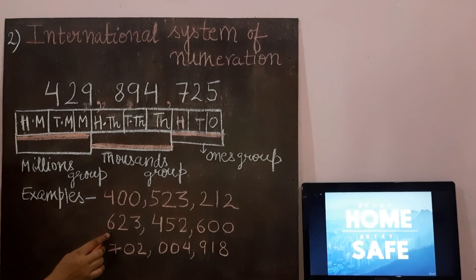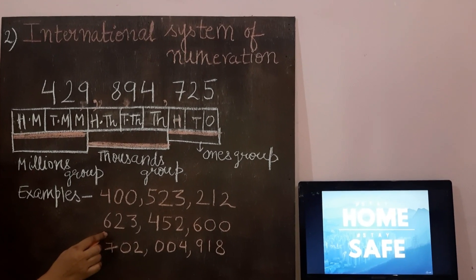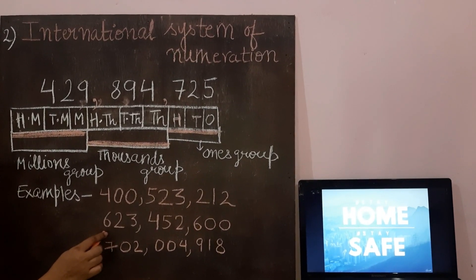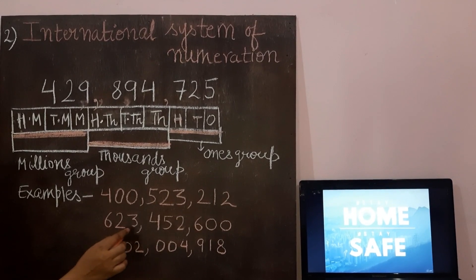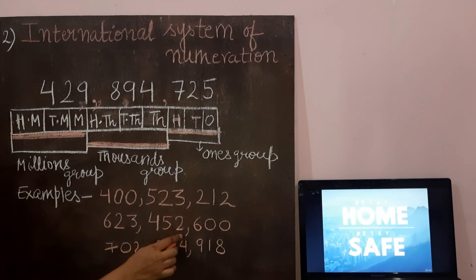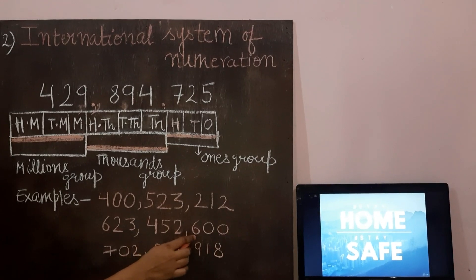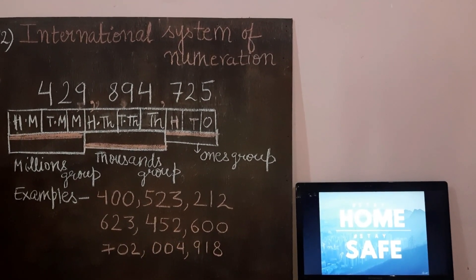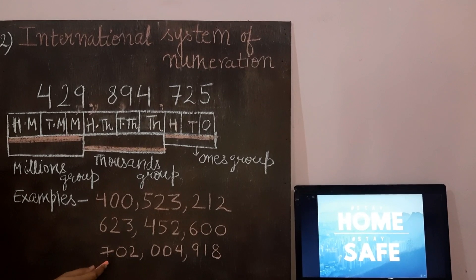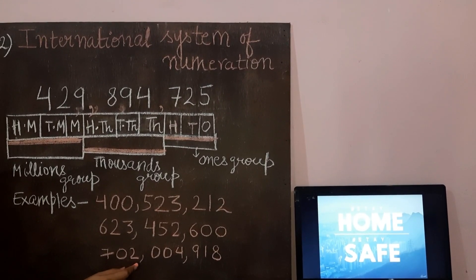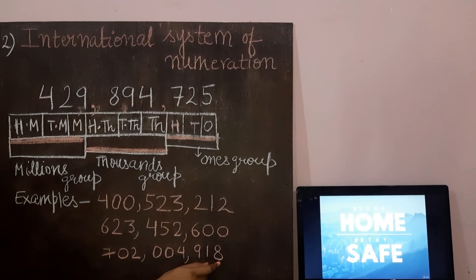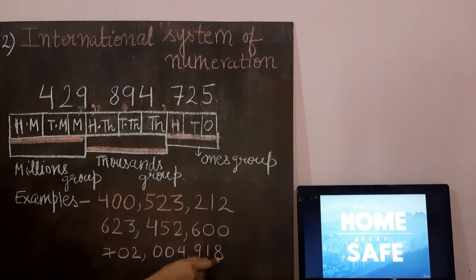Now the second number — please try to guess the number. The number is 623,452,600. Now the next one: it is 702,4918.